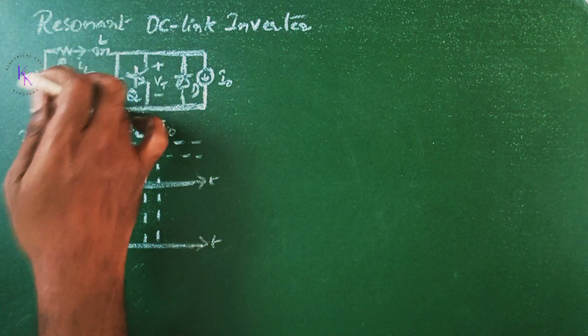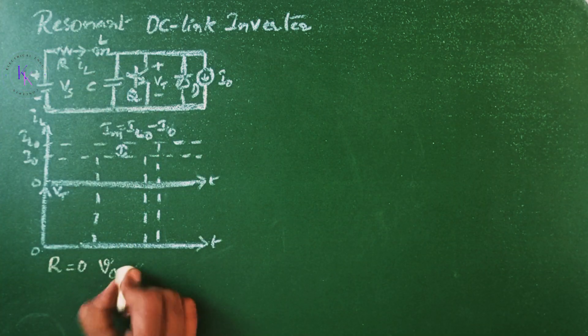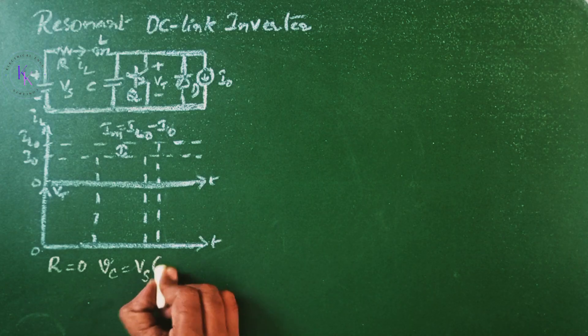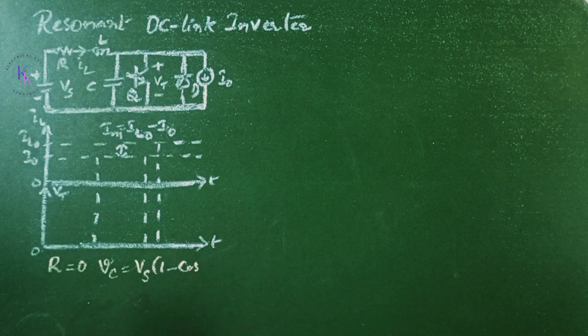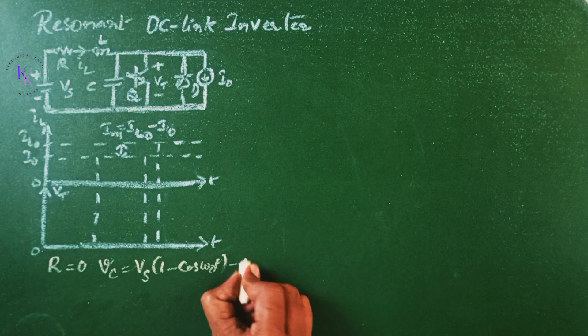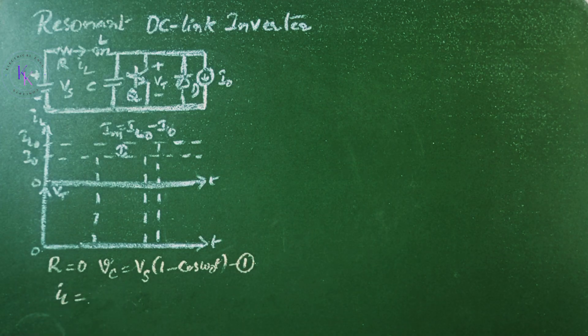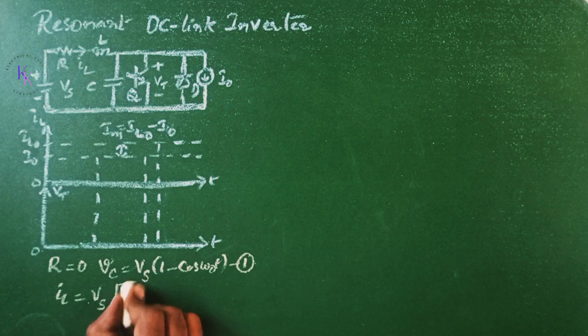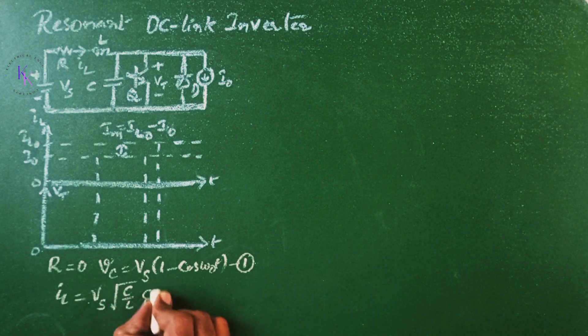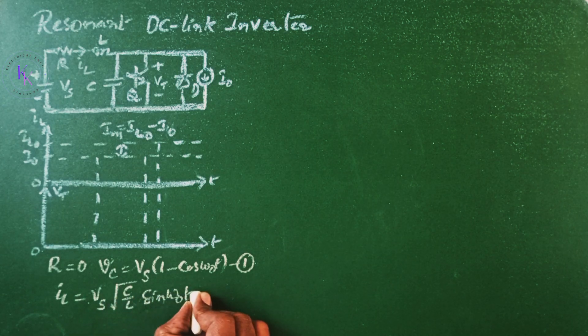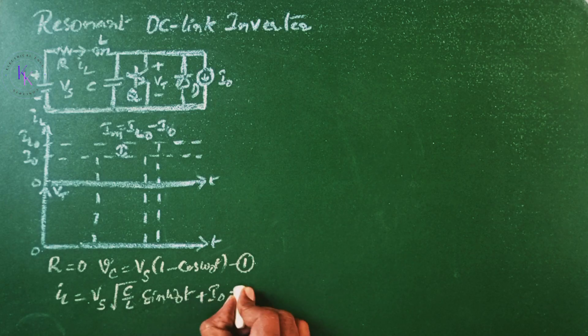the link voltage Vc is given by Vs(1 minus cos omega 0 T), let it be equation number 1, and the inductor current IL equals to Vs square root of C by L sin omega 0 T plus I0, that would be equation 2.